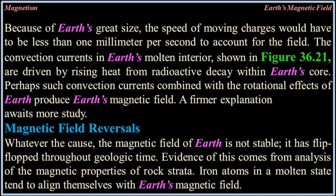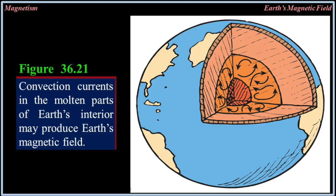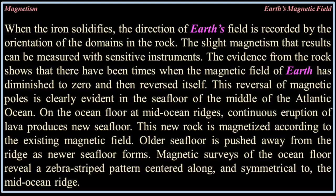Whatever the cause, the magnetic field of the Earth is not stable — it has flip-flopped throughout geological time. Evidence of this comes from analysis of the magnetic properties of rock strata. Iron atoms in a molten state tend to align themselves with Earth's magnetic field. When the iron solidifies, the direction of Earth's field is recorded by the orientation of the domains in the rock. Convection currents in the molten parts of Earth's interior may produce Earth's magnetic field.